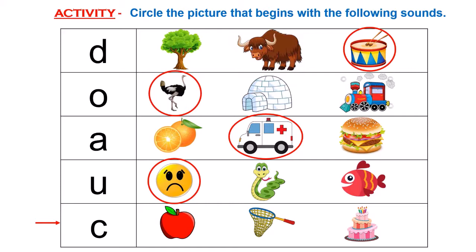The next letter is letter C. And C says K. The pictures are apple, net, cake. Apple, net, cake. I have to find the picture with the K sound. Apple doesn't begin with K — it says A. And net begins with N. And cake begins with K. So the picture is cake, because it begins with the sound K.